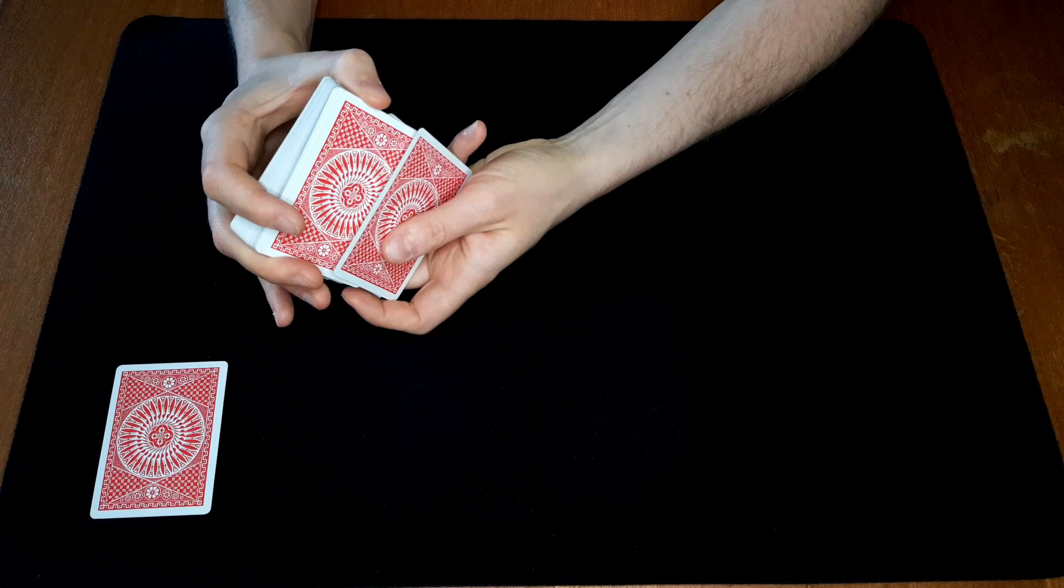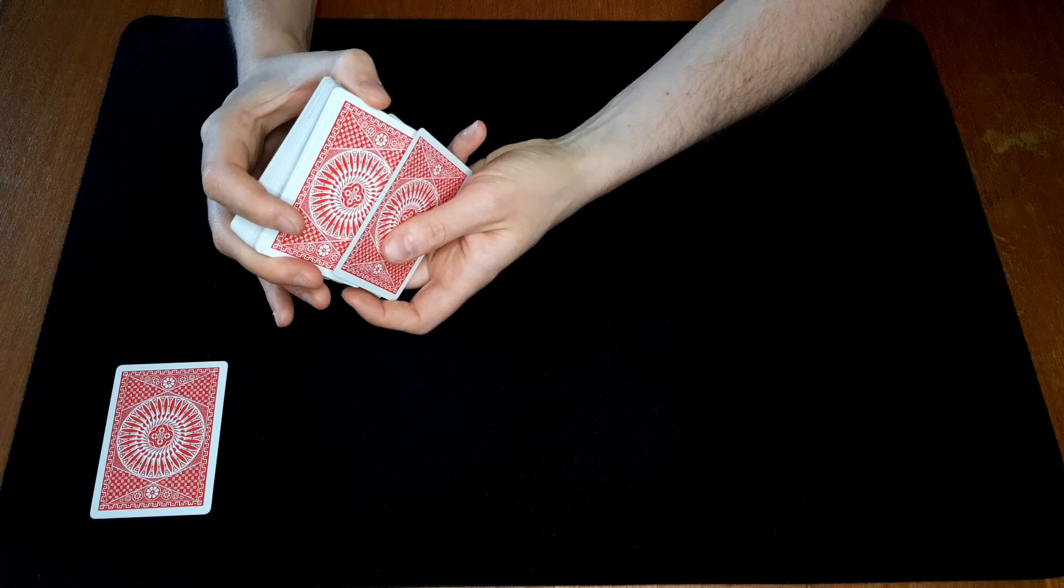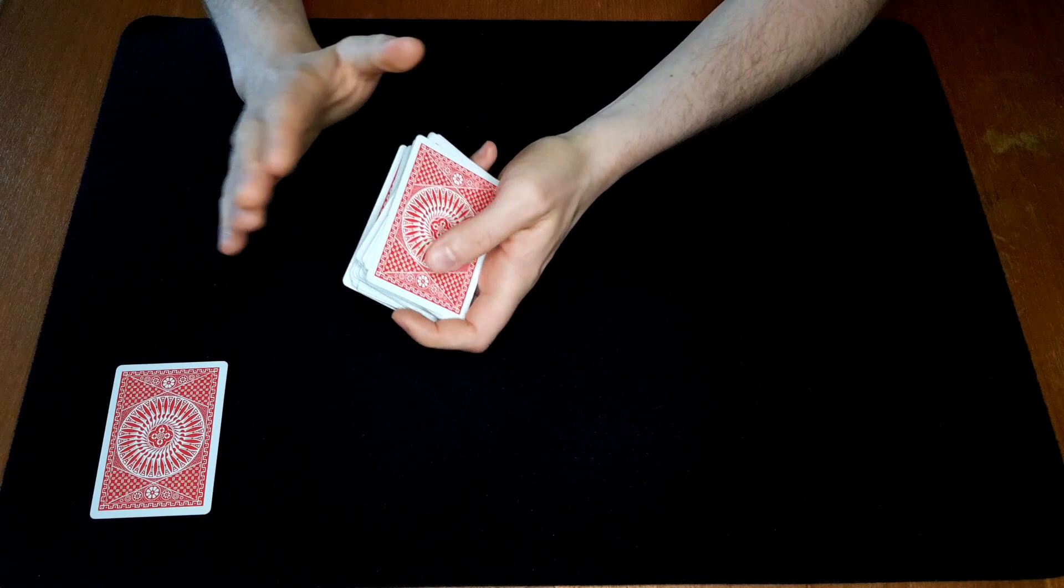And then what you can do is you can milk the deck, which means holding back the top and the bottom card like this. So that's two sevens that will end up on the bottom. And then we shuffle this seven back to the top.